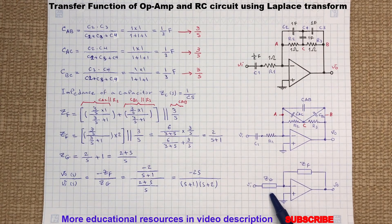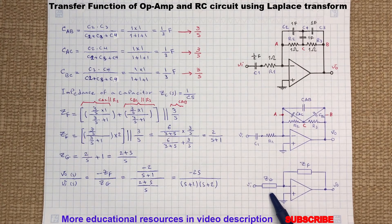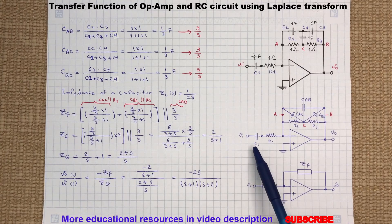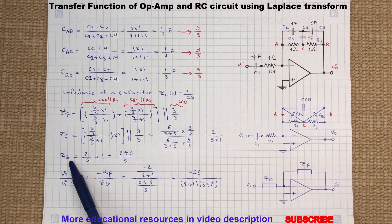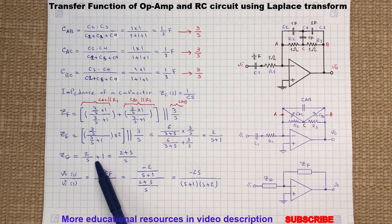Now back to the video. Likewise, ZG is the impedance containing CA1 in series with R1, so ZG equals impedance of CA1 plus value of R1.